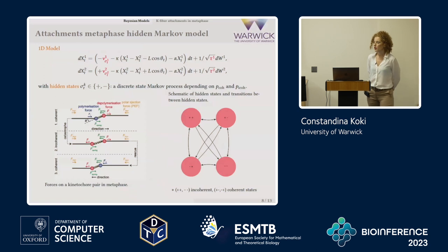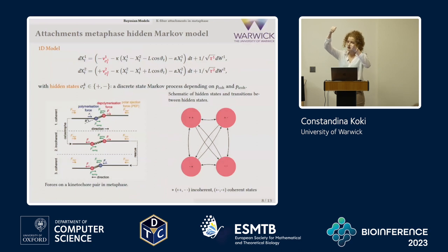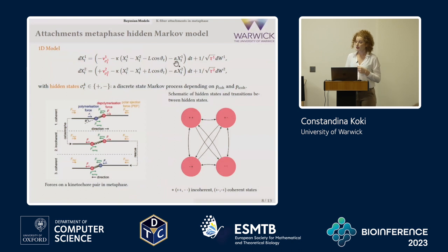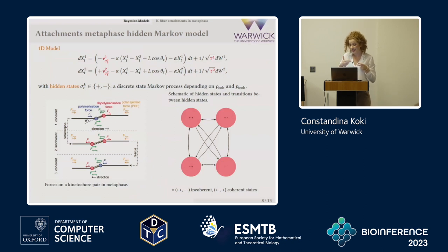This is our model. We have two stochastic differential equations working with the x-axis. This term represents the force caused by the spring — including the spring length, spring constant, and a cosine theta factor accounting for the angle between sisters when they are not aligned. This is the polar ejection force, this is the error term assuming Gaussian errors, and these are the velocities caused by the attachments around the chromosomes. The two SDEs are set under a hidden Markov model framework.